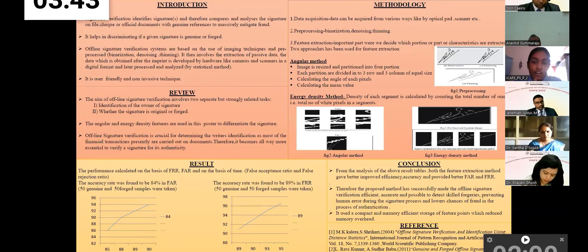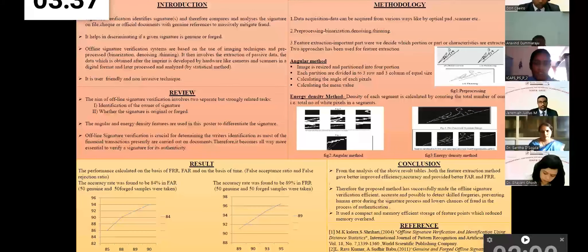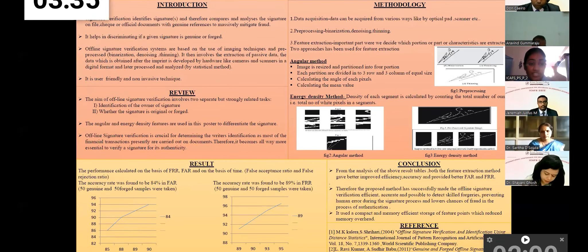Then it involves the extraction of data, which is obtained by cameras or scanners in digital format and later processed and analyzed in a statistical method. So this is a user friendly and non-invasive technique. So next is the review. The aim of the offline signature verification involves identification of the owner of signature and whether the signature is original or false. So in this poster, I've taken two features that is angular and energy density feature to differentiate the signature.